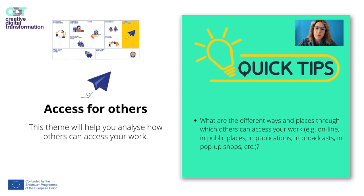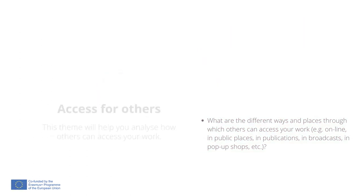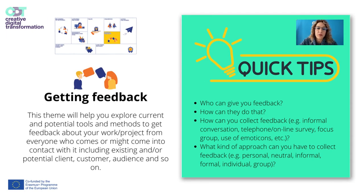The Access for Others theme will help you analyze how others can access your work — for example, online, in public places, through publications, broadcast, pop-up shops, and so on. The Getting Feedback theme will help you explore current and potential tools and methods to get feedback about your work or project from everyone who comes into contact with it, including existing or potential clients, customers, and audience. Ask yourself: who can give you feedback and how? How can you collect it — through informal conversations, telephone, online services, focus groups, emoticons, etc.? What kind of approach can you use — personal, neutral, informal, formal, individual, or group?